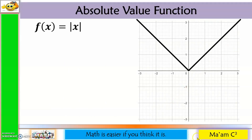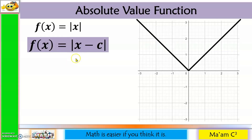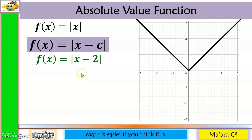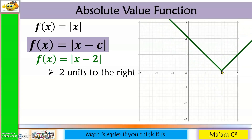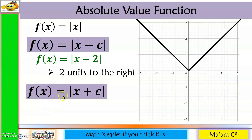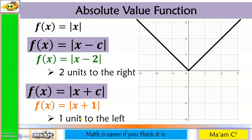For the absolute value function, f(x) = |x - 2|: minus 2 makes the graph move 2 units to the right, so the vertex moves from (0, 0) to (2, 0). Another example: f(x) = |x + 1| — plus 1 makes the graph move 1 unit to the left, so the vertex moves to (-1, 0).